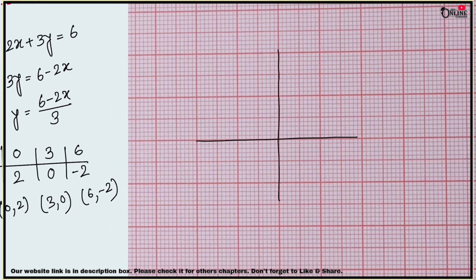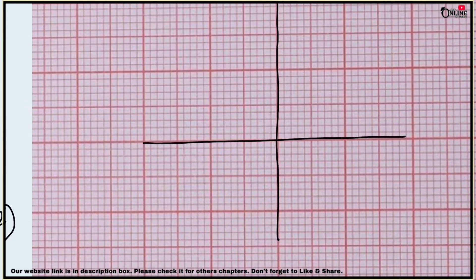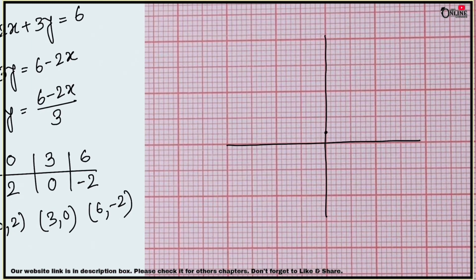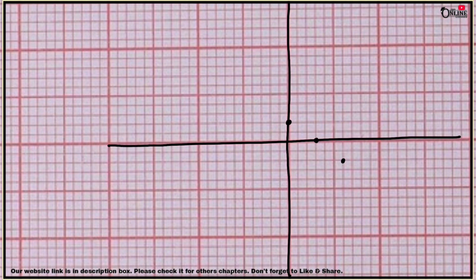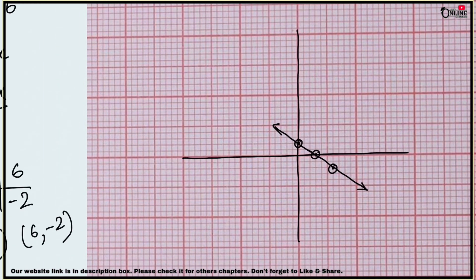Plot (0, 2), then (3, 0), then (6, -2) on the graph. Join these three points with a scale to get the straight line for 2x + 3y = 6.